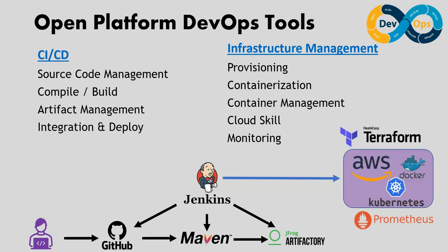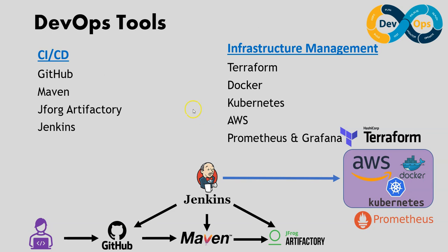For infrastructure, there are different tools. Terraform is a provisioning tool, Docker is a containerization tool, Kubernetes is a container management tool, and AWS is the cloud platform — it's widely used. For monitoring, we can use Prometheus and Grafana. So the open platform tools are: GitHub, Maven, JFrog Artifactory, Jenkins, Terraform, Docker, Kubernetes, AWS, Prometheus, and Grafana. If you have skills in these tools, you are a DevOps engineer — not a cloud native DevOps engineer.